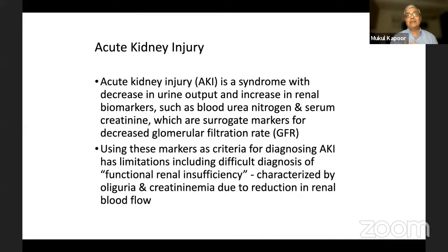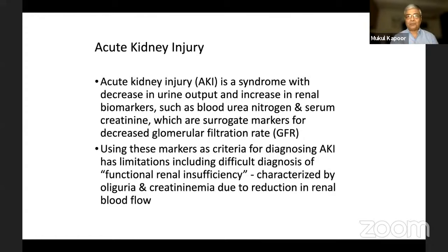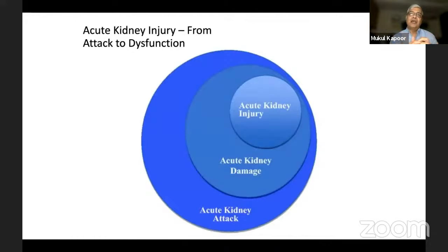AKI is a syndrome in which there is a decrease in urine output and an increase in renal biomarkers such as blood urea nitrogen and serum creatinine — both surrogate markers of decreased glomerular filtration rate (GFR). Using these markers has certain limitations because it is difficult to diagnose functional renal insufficiency. If you look at AKI in general, it occurs in three phases: the part we see — acute kidney injury — is a small part of the spectrum. The major part consists of acute kidney attack and acute kidney damage.